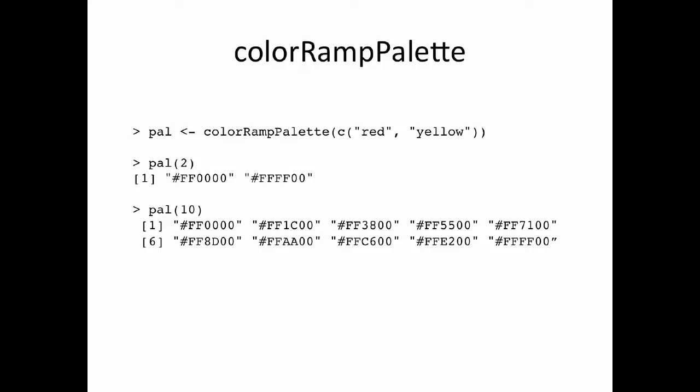The format here is slightly different: instead of a matrix with red, green, and blue values, it gives a character vector with colors represented in hexadecimal. Ignoring the pound symbol, there are six digits per string — the first two represent red, the second two green, the third two blue. For the first color I've got FF0000: FF is the maximum in hexadecimal, so maximum red, zero green, zero blue — that's red. The second string has FF for red, FF for green, 00 for blue — maximum red and green gives yellow.